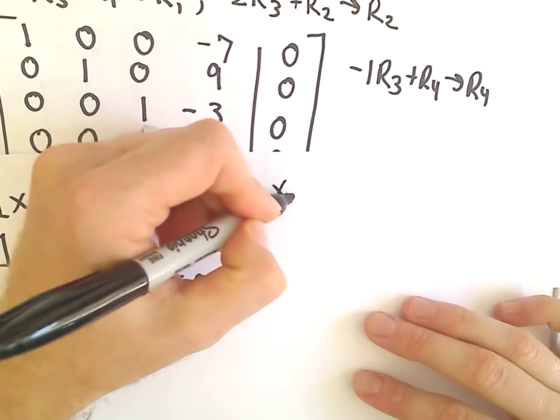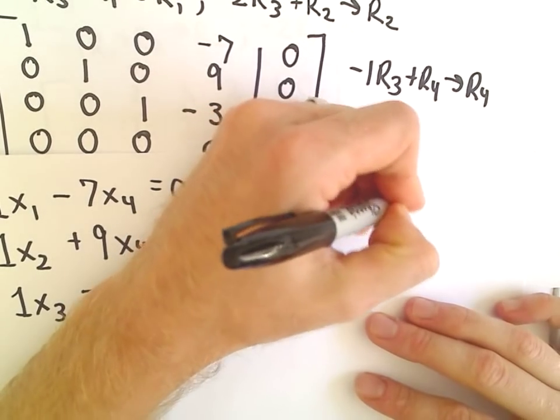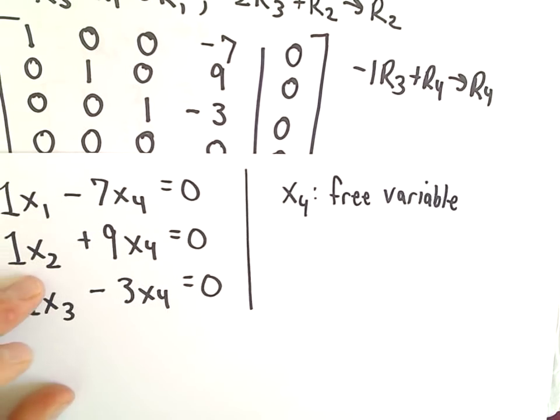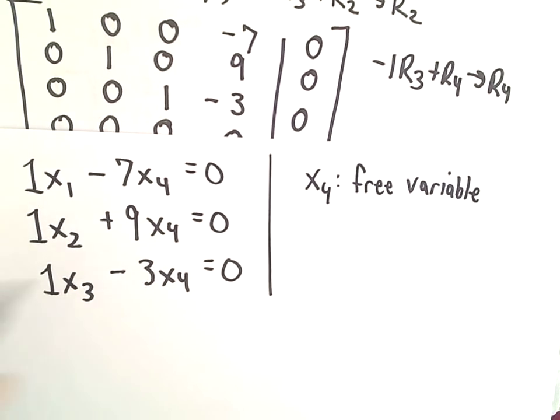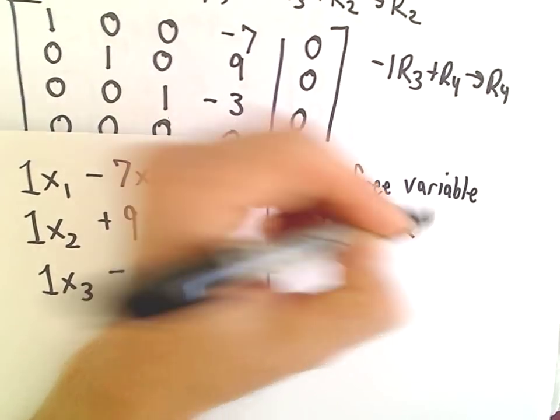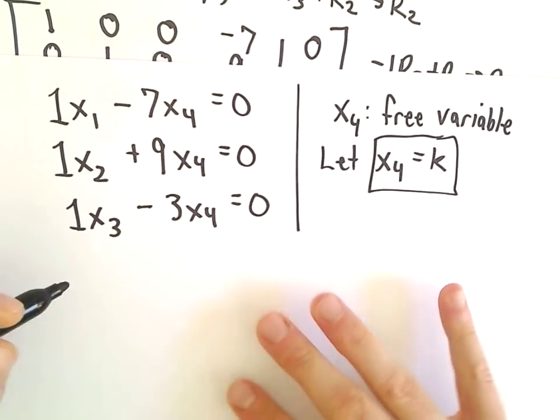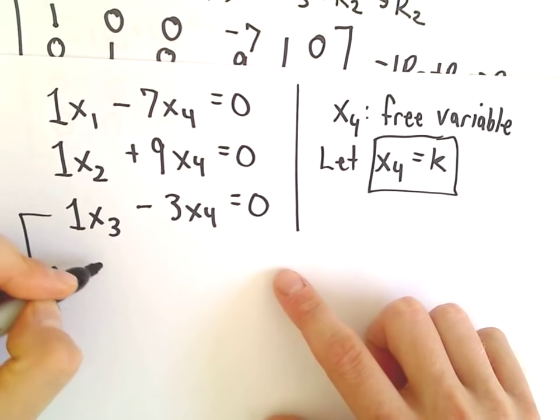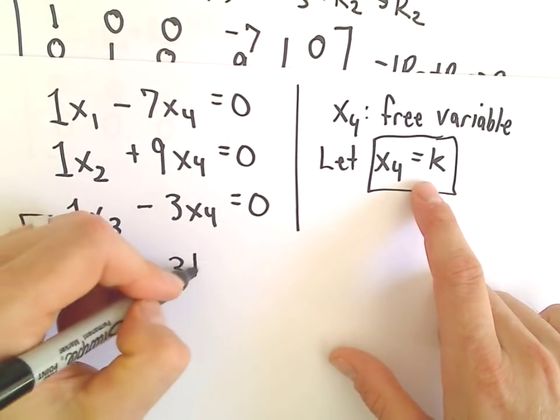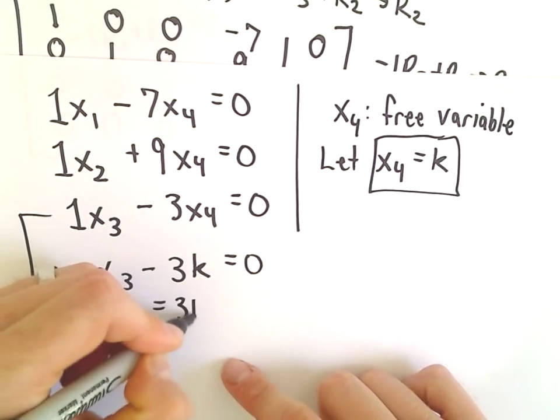Our last variable, x sub 4, that's what we're going to call our free variable. And what that basically says is we can define that to be whatever number we want, and then we can backtrack and figure out values for the other variables. So generically, I'm just going to let x sub 4 equal the number k. And then I'm going to solve for the other numbers. Well, let's take our last equation. So we have x sub 3 minus 3 times x sub 4, again, which we're defining to be k. Well, if we solve, that says that x sub 3 would equal 3k.